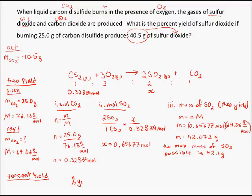Percent yield equals actual over theoretical times 100. So, that's going to be 40.5 grams of SO2 actually produced over a possible 42 point— and now I'm going to use the unrounded value in this subsequent calculation—over a possible 42.072 grams.